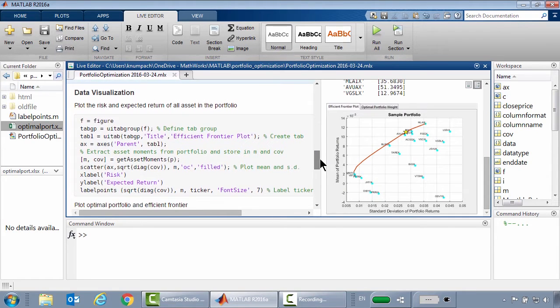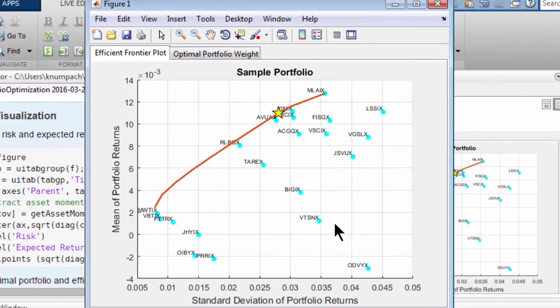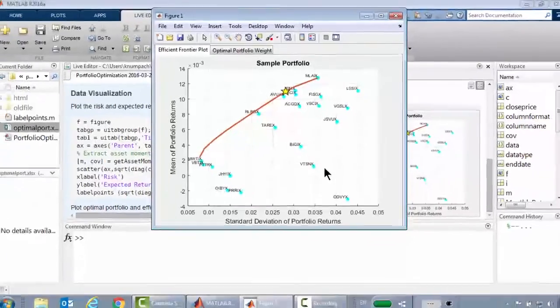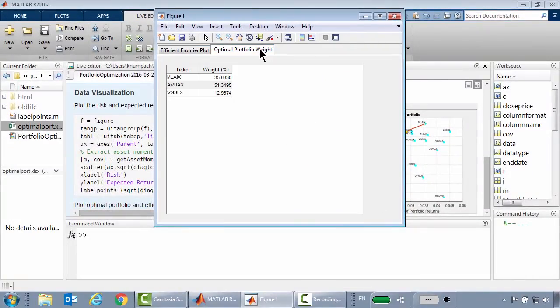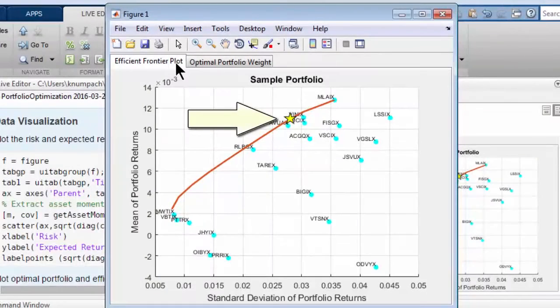The last section of codes is for visualizing the result. The graph here is the efficient frontier which is mainly drawn by using plot frontier function. The table here is the weight of optimal portfolio which was plotted as a yellow star in the efficient frontier.